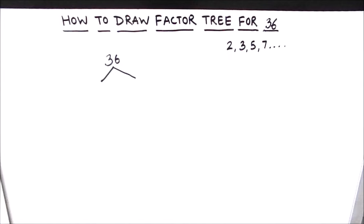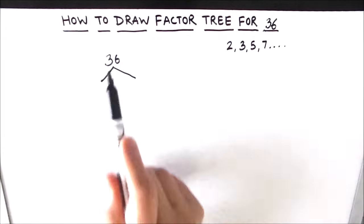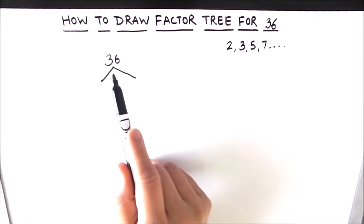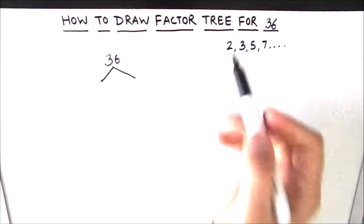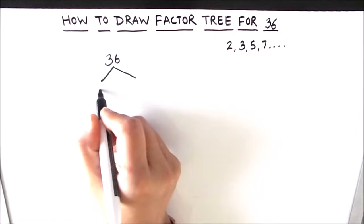The first clue to find the factors of any number is to check whether the number is even or not. Here we see that 36 is an even number, and we know for sure that all even numbers are divisible by 2, so we can use 2 as one of the factors of 36.